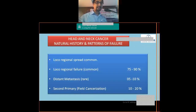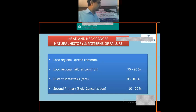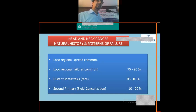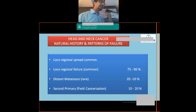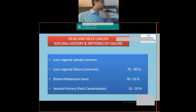Head and neck cancers have a typical natural history — a characteristic behavior. Most of these cancers are known for locoregional spread, meaning spread to the local area as well as regional spread. Regional spread refers to spread to the draining lymph nodes corresponding to the primary site.